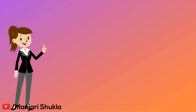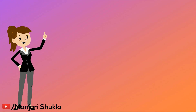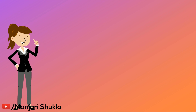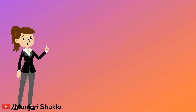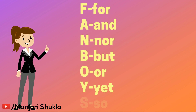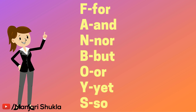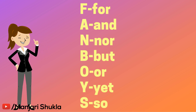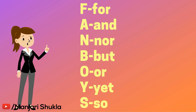There is a trick to remember all seven coordinating conjunctions, and it is FANBOYS. F is for 'for', A is for 'and', N is for 'nor', B is for 'but', O is for 'or', Y is for 'yet', and S is for 'so'. So this was a very easy trick to remember all seven coordinating conjunctions.